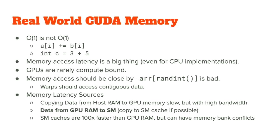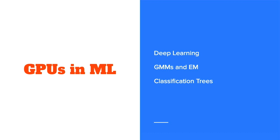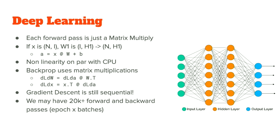Let's talk about GPUs in machine learning. Deep learning — what exactly is it? We've all probably used PyTorch or TensorFlow. Each layer, each forward pass, is just a matrix multiply. Anyone who does deep learning and hasn't implemented their own has missed something — it's a really, really simple thing to do. It's one of the simplest algorithms in ML from a pure mathematical or programming perspective. The forward pass is a matrix multiply, and we've discussed that matrix multiply is really fast on a GPU.